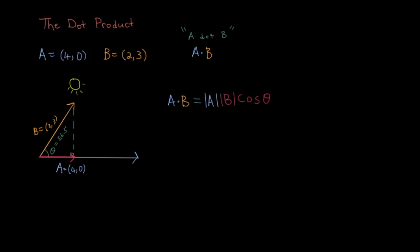So to calculate the dot product in this case, we know that the magnitude of A is equal to the square root of 4 squared, which equals 4.